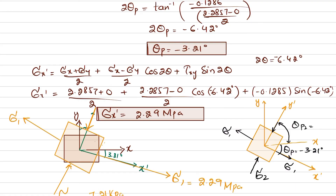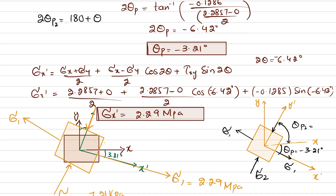We know that 2θp2 = 180° + 2θp1, which means θp2 = 90° + θp1. Since θp1 is minus 3.21 degrees, θp2 = 90° minus 3.21° = 86.79 degrees. This is the angle theta p2 for the second principal plane. That covers everything for problem 9-24.